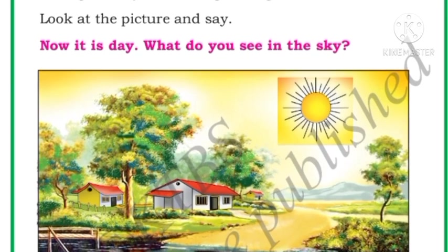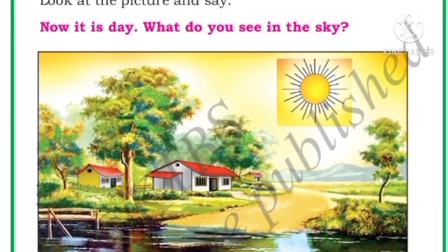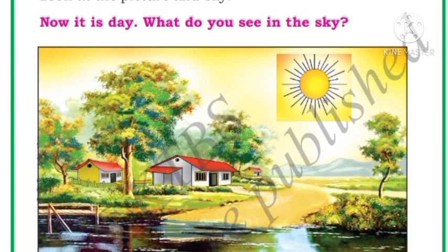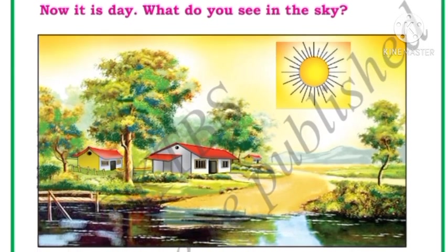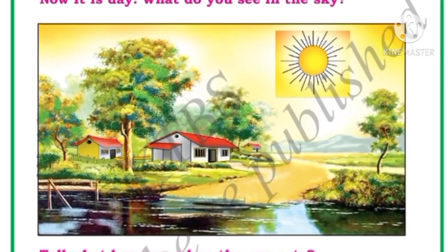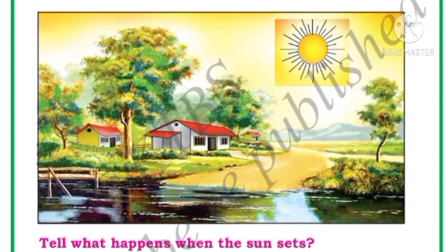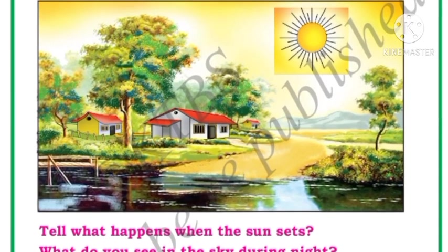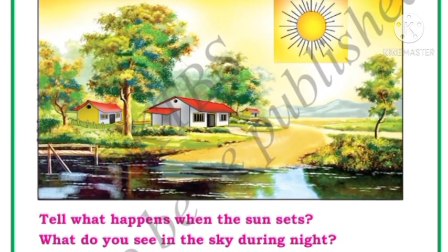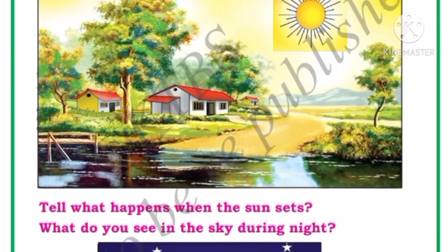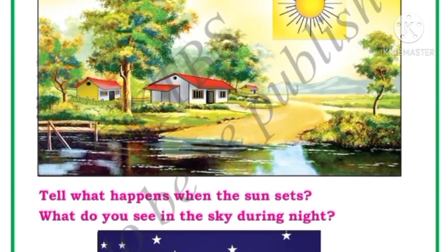Next, tell your friends the things you see in the sky during the day and during the night. Children, during the day you see the sun, and during the night you see the moon and the stars. Now it is day — what do you see in the sky? You see the sun in the sky.